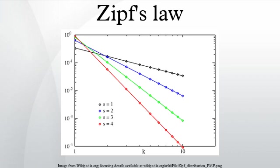the exponent s is 1. f(k, s, N) will then be the fraction of the time the kth most common word occurs.